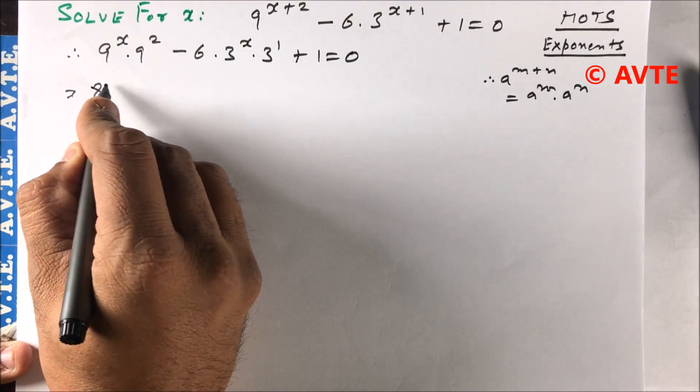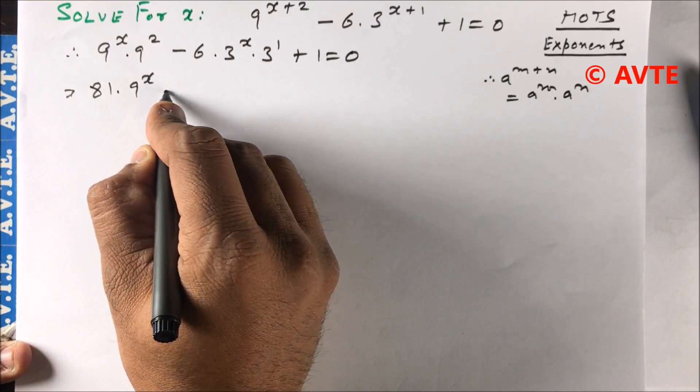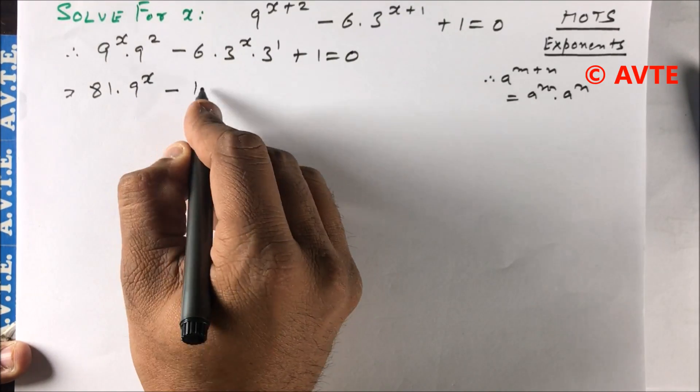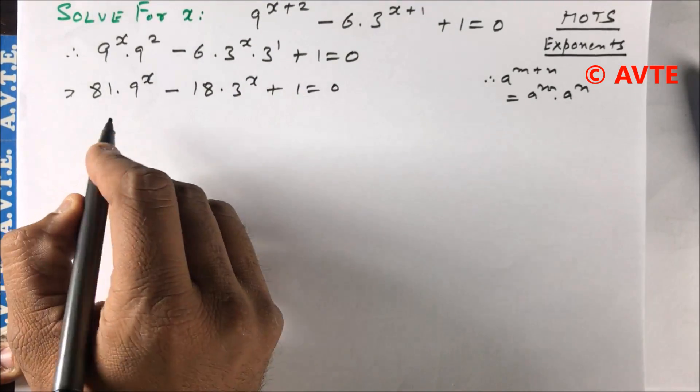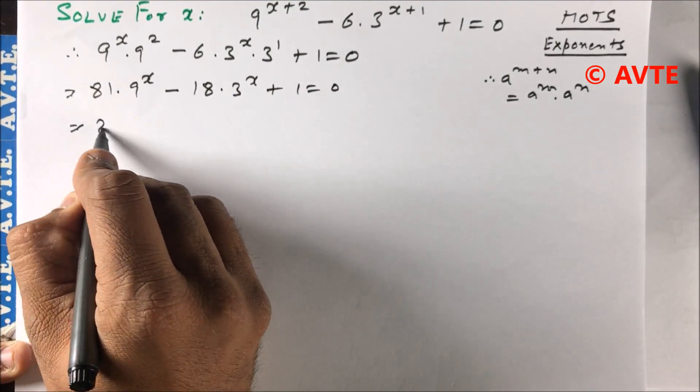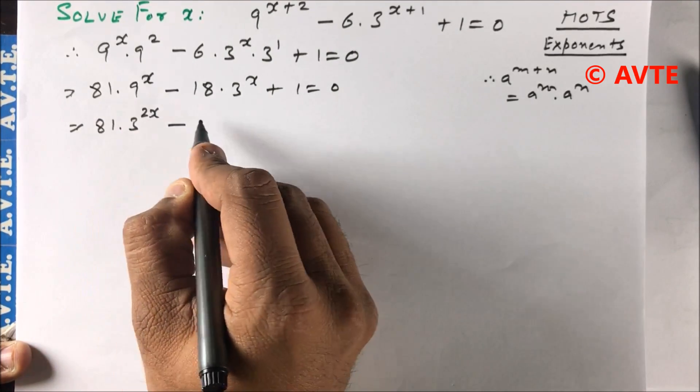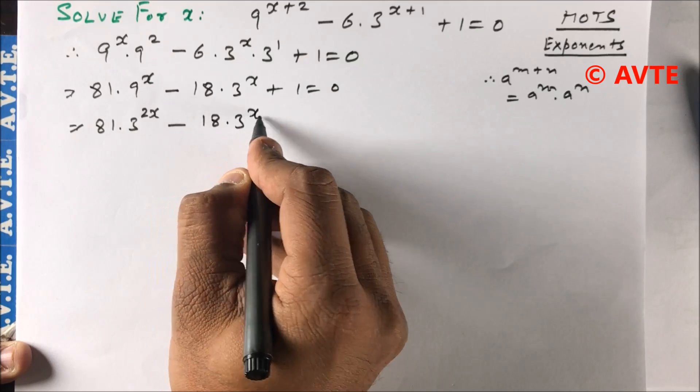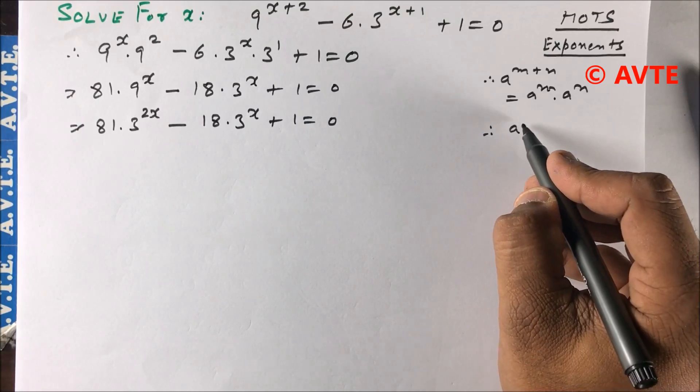So this is 81·9^x - 18·3^x + 1 = 0, since 9 squared is 81 and 6 times 3 is 18.